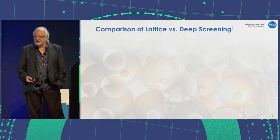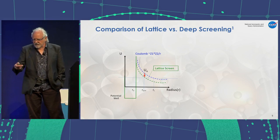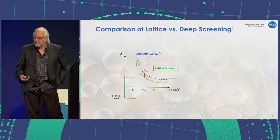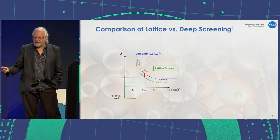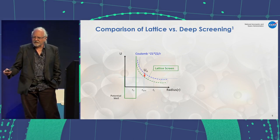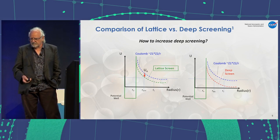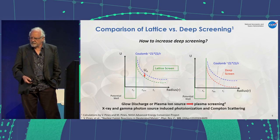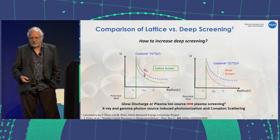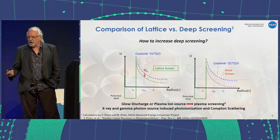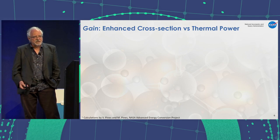Comparing lattice versus deep screening: we have the potential well between two nuclei and what the gamma factor would tell us—it's very difficult to get around the Coulomb barrier. We can lower that with electron screening. If we can somehow add additional electrons, we can increase it, and we call that deep screening. Glow discharge or plasma ion sources induce plasma screening, which we wrote about in the PRC paper. In addition, X-rays and gamma photons induce photoionization and Compton screening, giving rise to additional screening parameters.